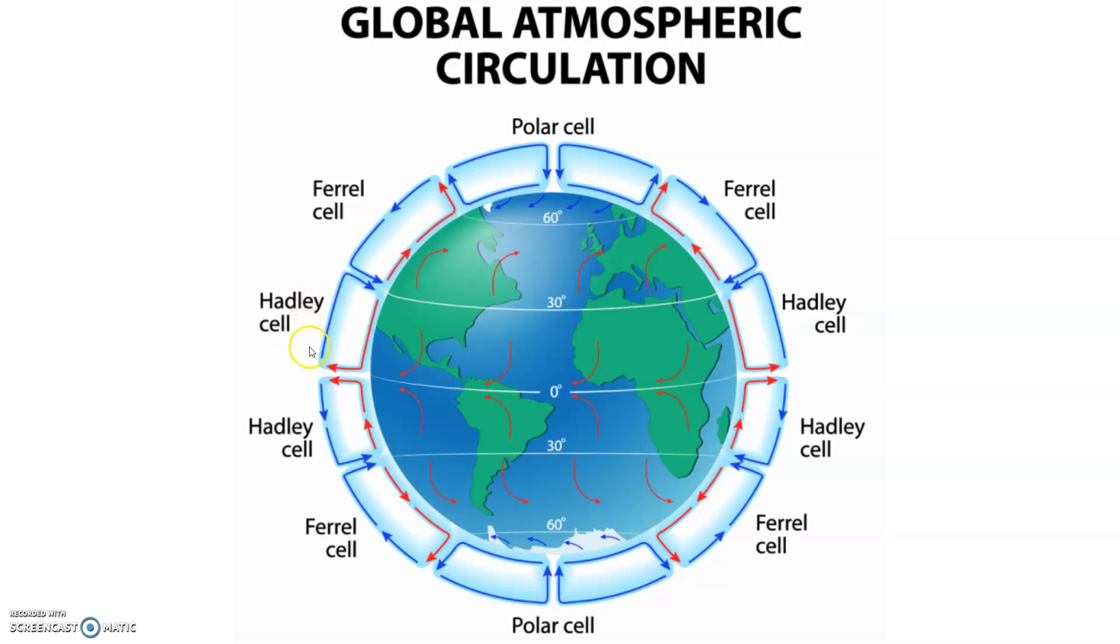You do want to know that the Hadley is from 0 to 30 on both the northern and southern hemisphere. The Ferrel cells are in the 30 to 60, again, northern and southern hemispheres. And then the poles go from 60 to 90, the polar cells.